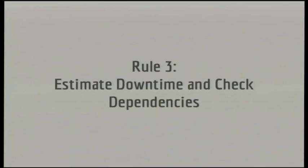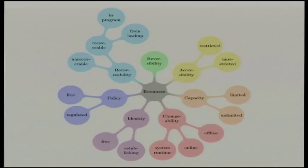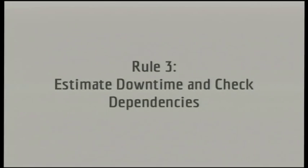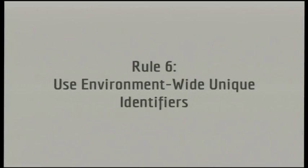Rule three is: estimate downtime and check dependencies. What it means is basically referring back to what I said about changeability. If you have a service that runs at some point and you have dependencies on that, you'd better make sure that all the dependencies are up to date and are aware of your restart, for example. Rule six is: use wide, unique identifiers. That's about identity - establishing identity and preventing possible problems with clashing identifiers at some point. Make sure identifiers are unique throughout your entire environment. This means, as the example coming up will show, make sure you don't reuse IP addresses.